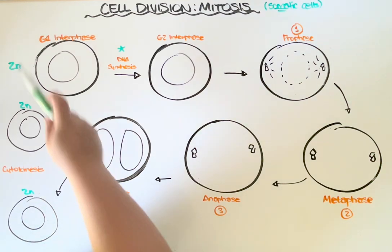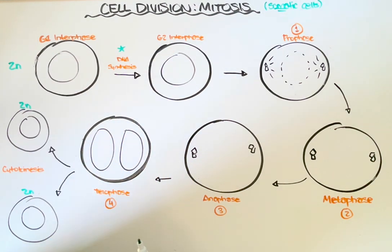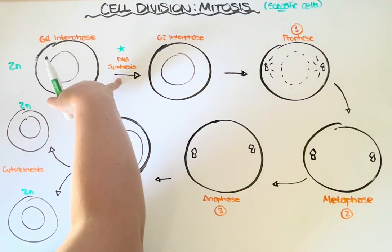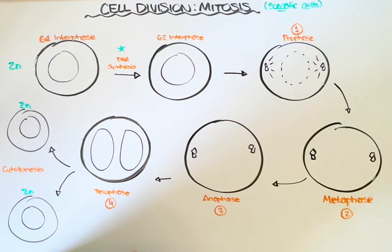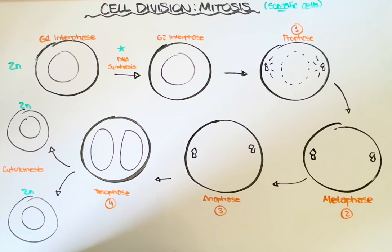Interphase can be split into three parts. During G1, the cell almost doubles in size — this is where it's carrying out its essential functions. During the S, or synthesis phase, that's where the DNA gets duplicated. And during G2, the cell continues to grow and carry out those functions required for life.